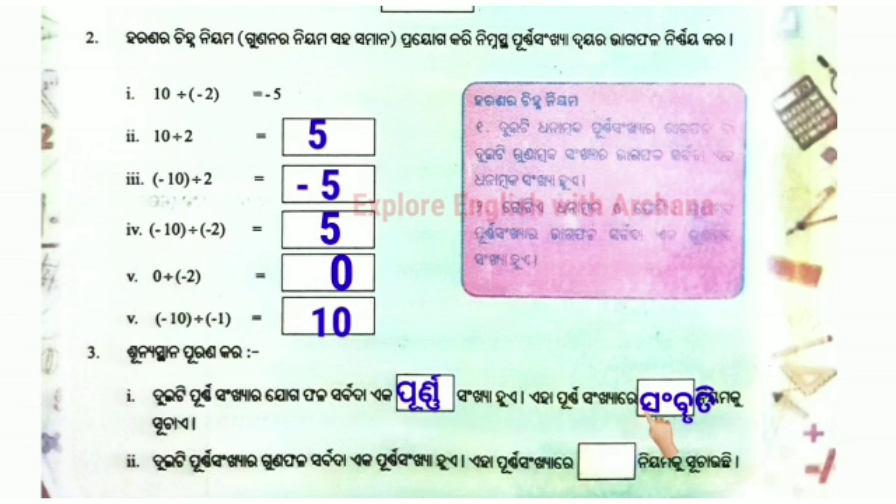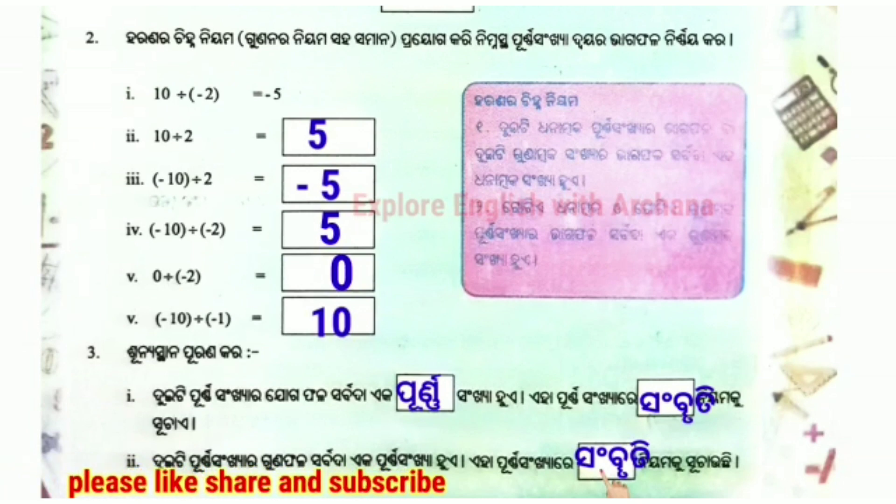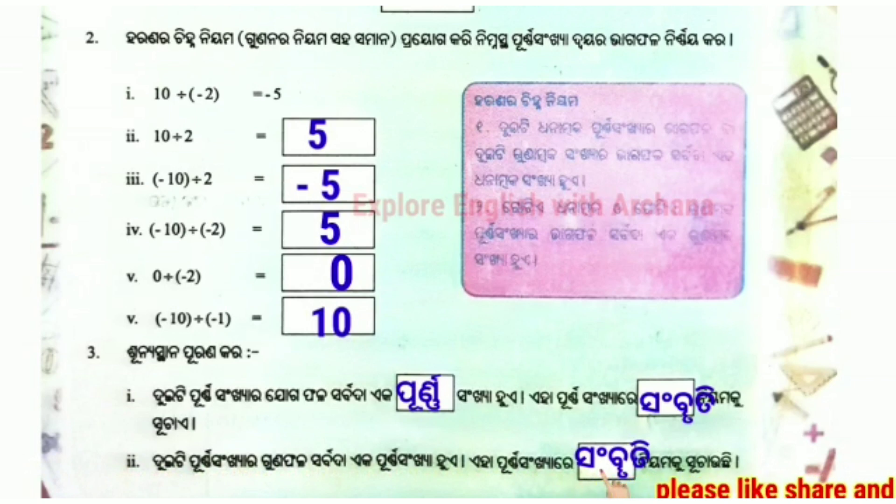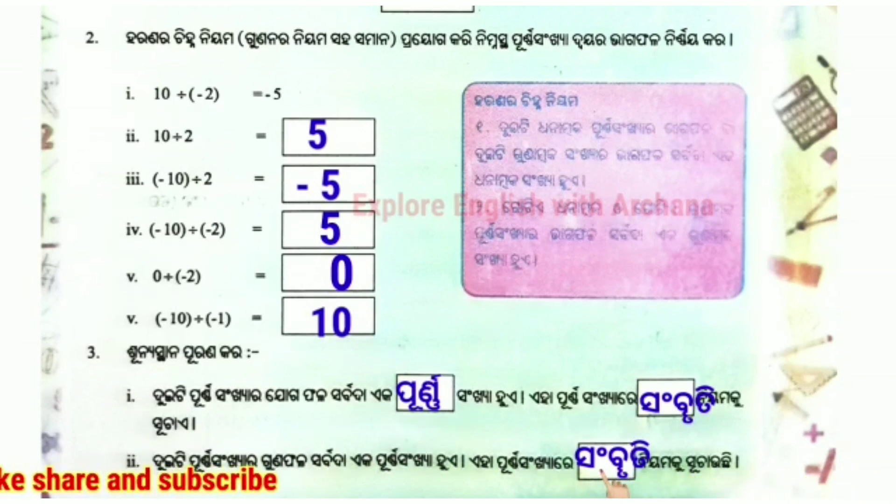The sum of two integers is always an integer. This property is known as the closure property of integers under addition and multiplication. Further details will be discussed later.